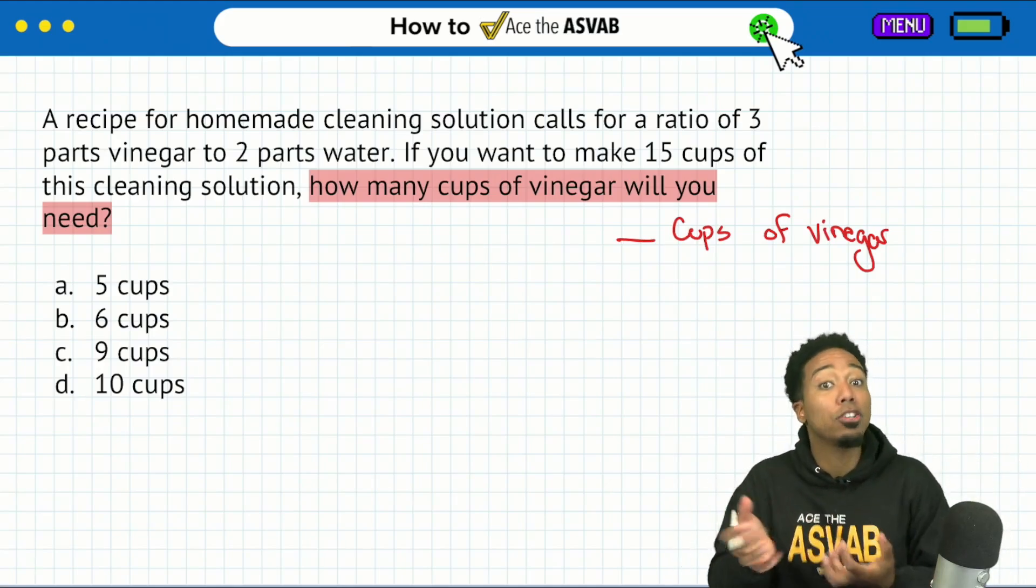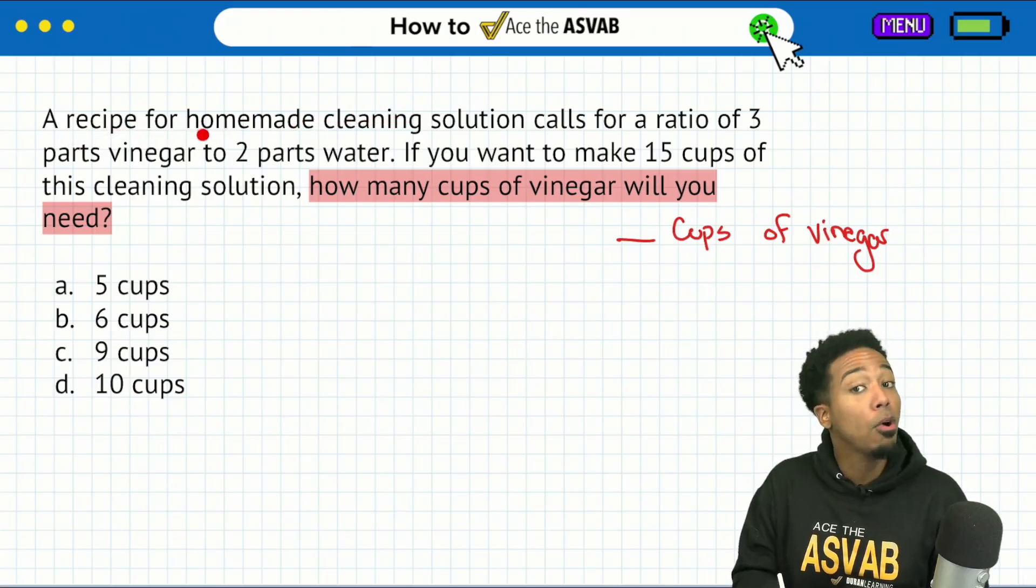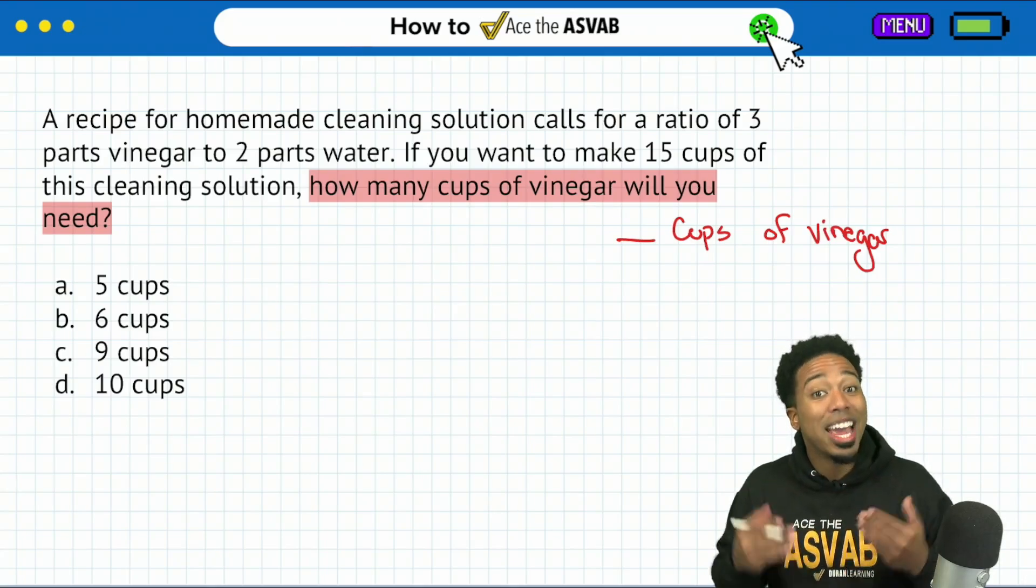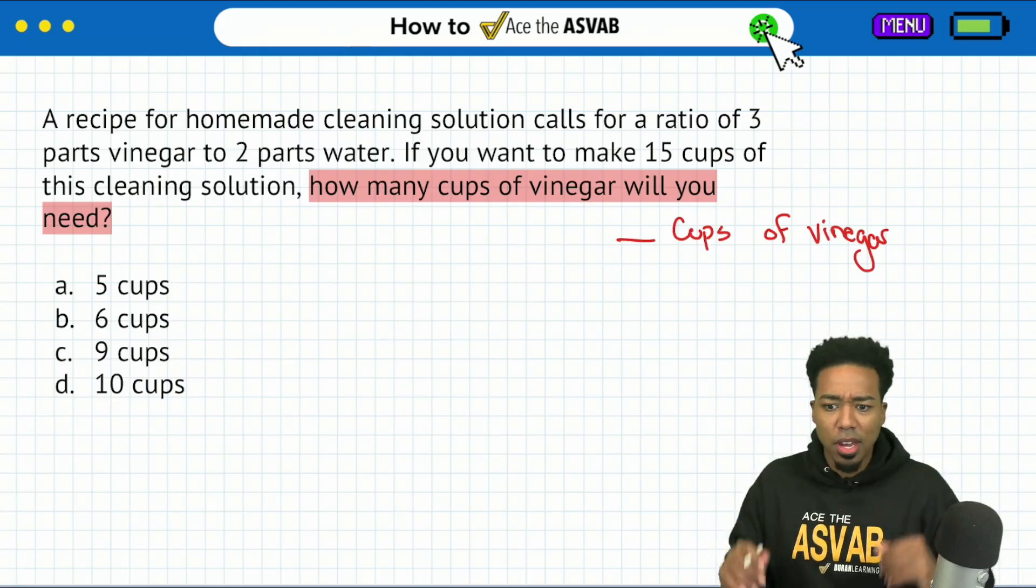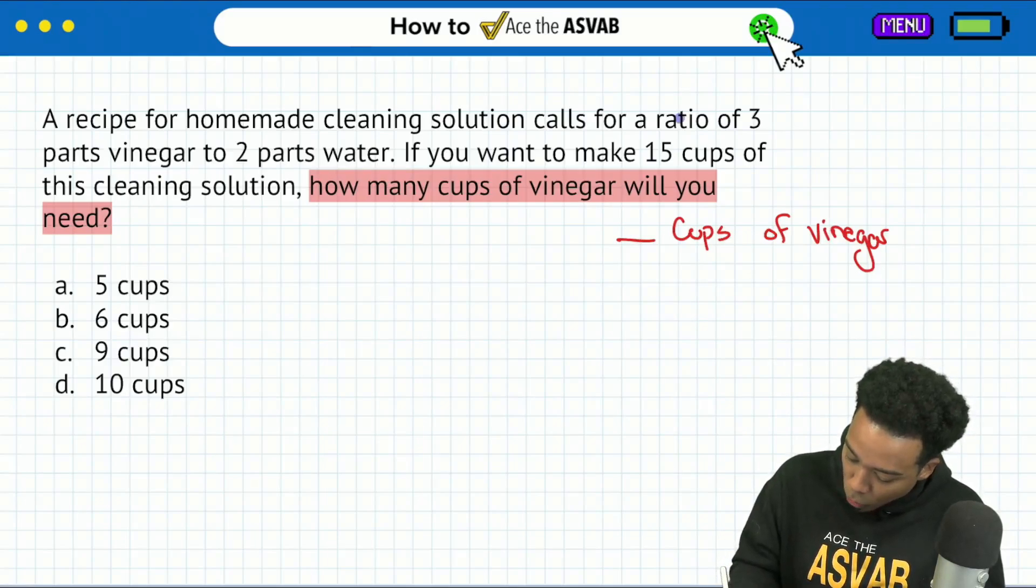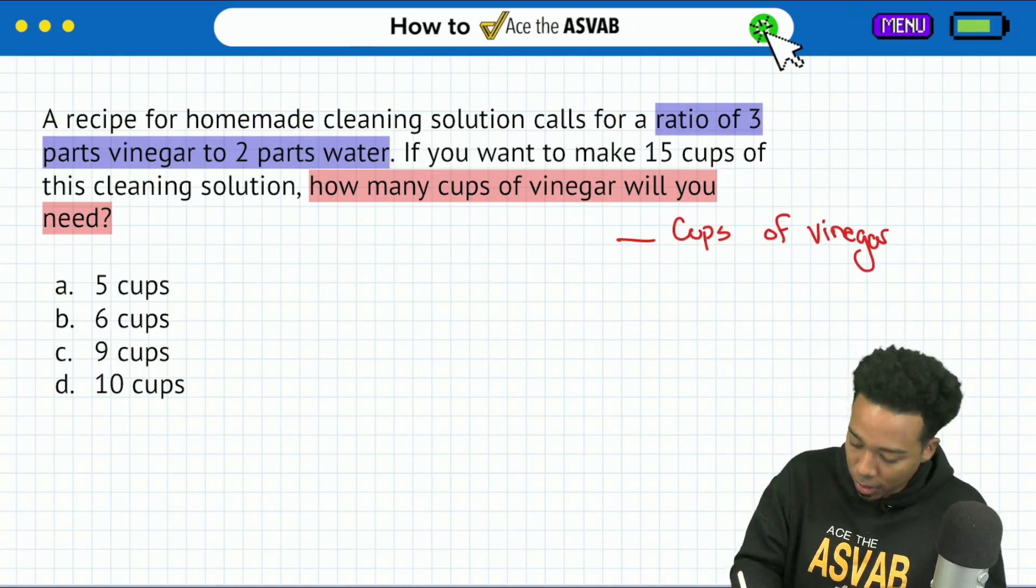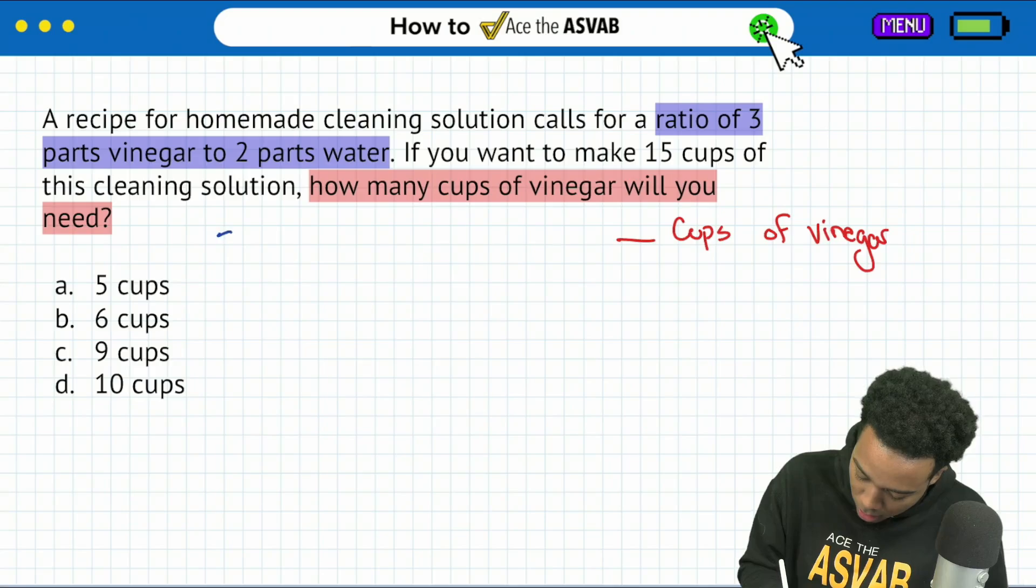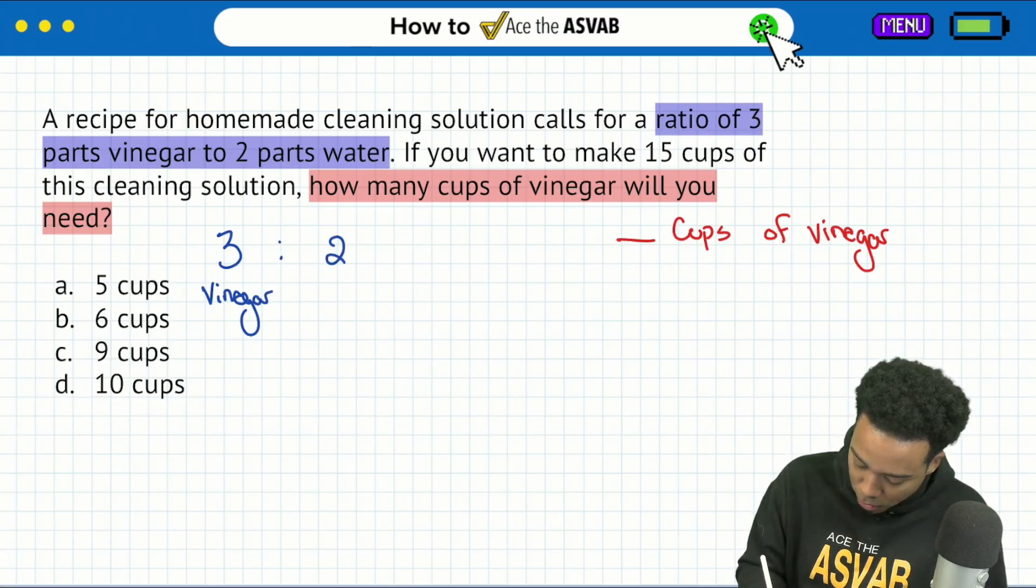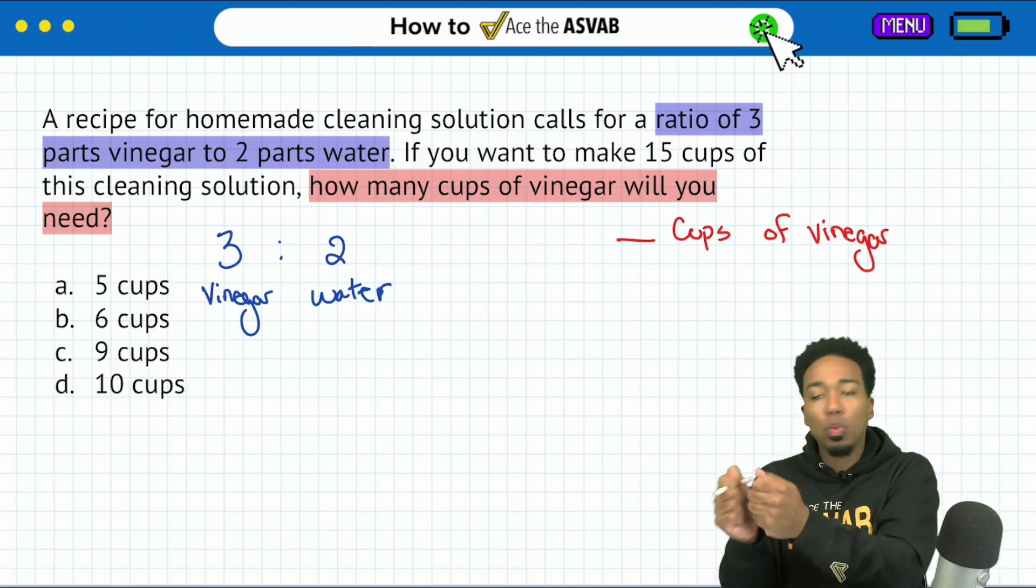How do I find this connection? So here, a recipe for homemade cleaning solution calls for a ratio of three parts vinegar to two parts water. So boom, there it is. Vinegar is mentioned and it's being compared to water in some sort of recipe for a homemade solution. So we'll write that down. It calls for a ratio of three parts vinegar to two parts water. So I'll say three parts vinegar to two parts water.